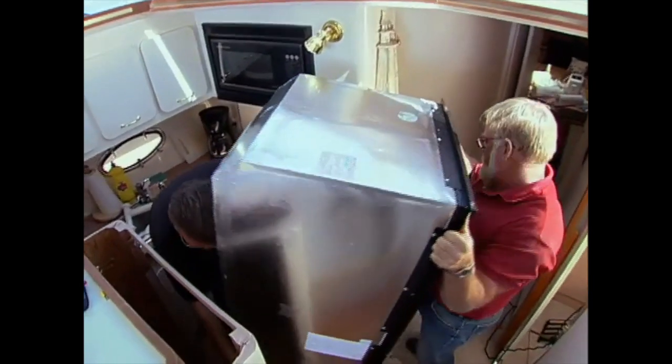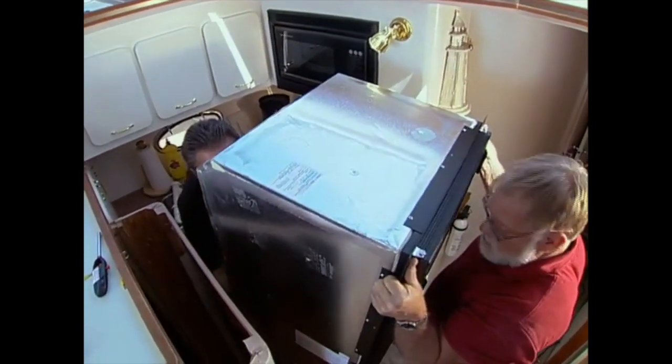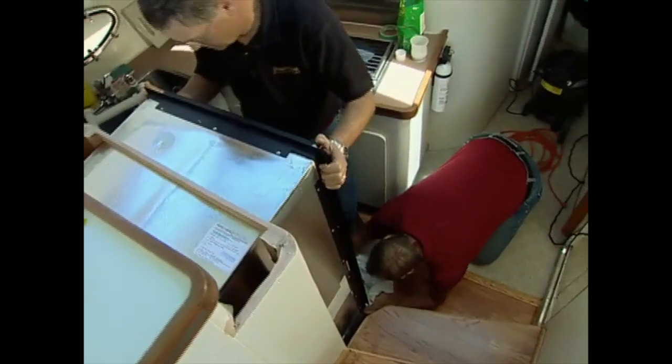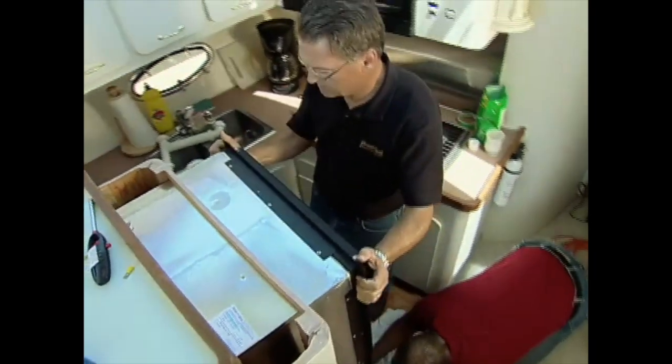With the wiring prepped, the new unit was brought into position. The AC cord plugged in and the 12-volt wiring fed through under the fridge for connection later, and the fridge was pushed back into place in the cabinet.